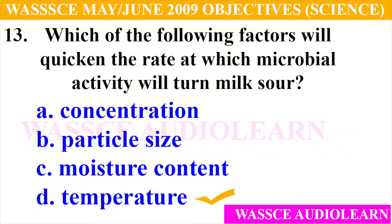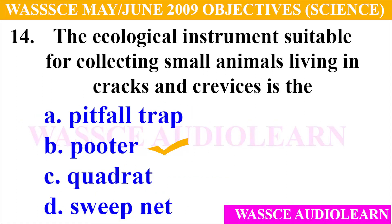Question 13: Which of the following factors will quicken the rate at which microbial activity will turn milk sour? A. Concentration, B. Particle size, C. Moisture content, D. Temperature. And the answer is D, temperature.